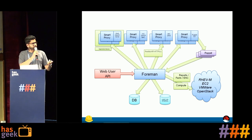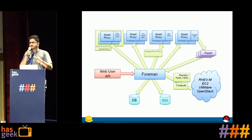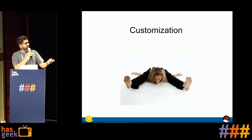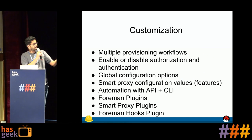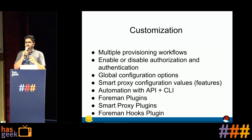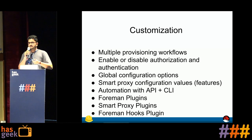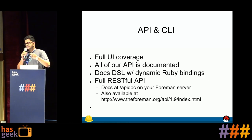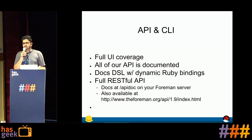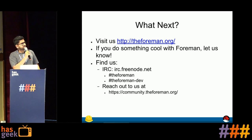Foreman has a web API so you can manage your systems by writing your own scripts. Foreman also has a plugin-based architecture — if you want to use Foreman only for reporting or only for provisioning, you can disable the other features. There is an API, a CLI, and a UI interface, so whatever you can do in the UI you can also do via CLI, allowing you to write custom scripts and use Foreman the way you want.